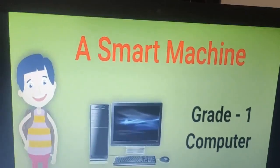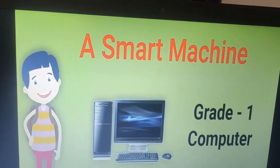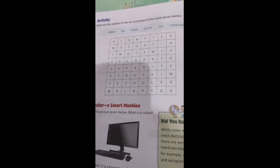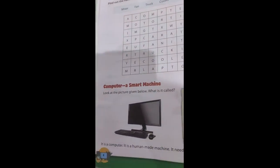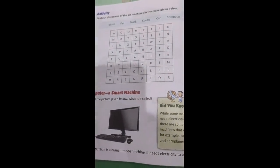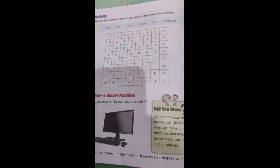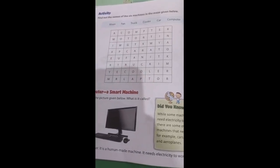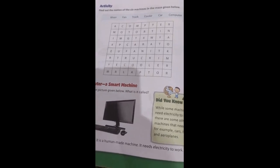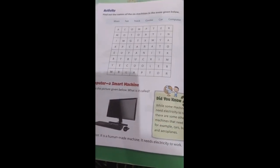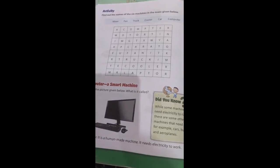I hope you have understood what a smart machine — a computer — is. Till that time, you have to read the lesson and find six machines from the maze on page number four. Also find the names of machines used in your house and how they are used. Try to find out the uses of computers in your surroundings — ask your parents or family members how a computer is helping them in their day-to-day life.